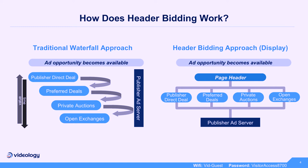Header bidding allowed the playing field to be leveled — a buyer at the bottom who might be willing to pay more for that impression at that time could now compete with and win over a publisher direct deal. Coming from display, it tends to be more supply than demand, and having the liquidity of extra buyers within the process allowed for greater yield for publishers.